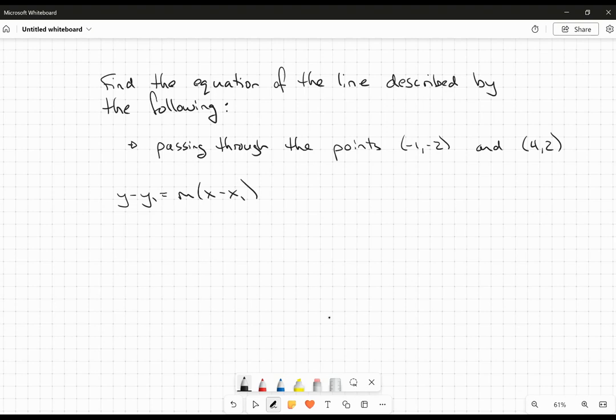But you might need to use the slope-intercept form y equals mx plus b. And there are other forms of the equation of the line, but I'm not going to go through and spend time going through all of those. I'm just going to really hit these two.